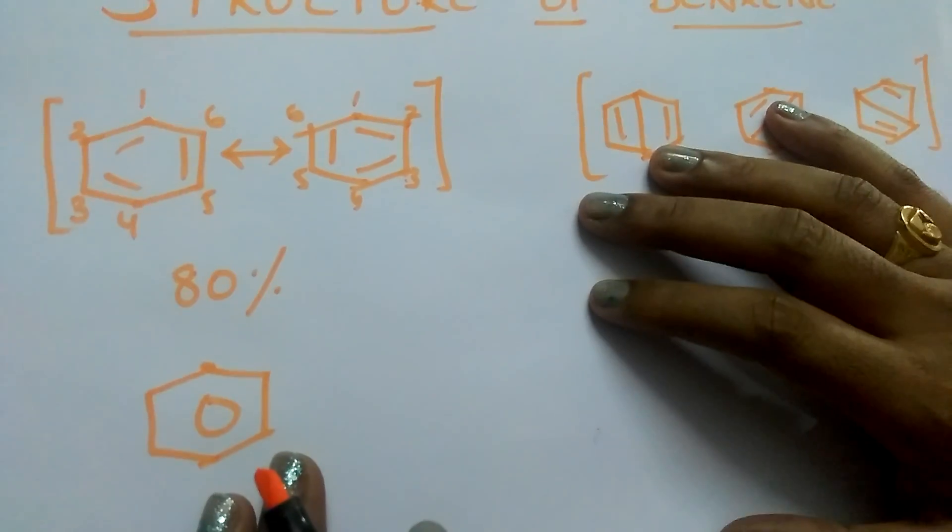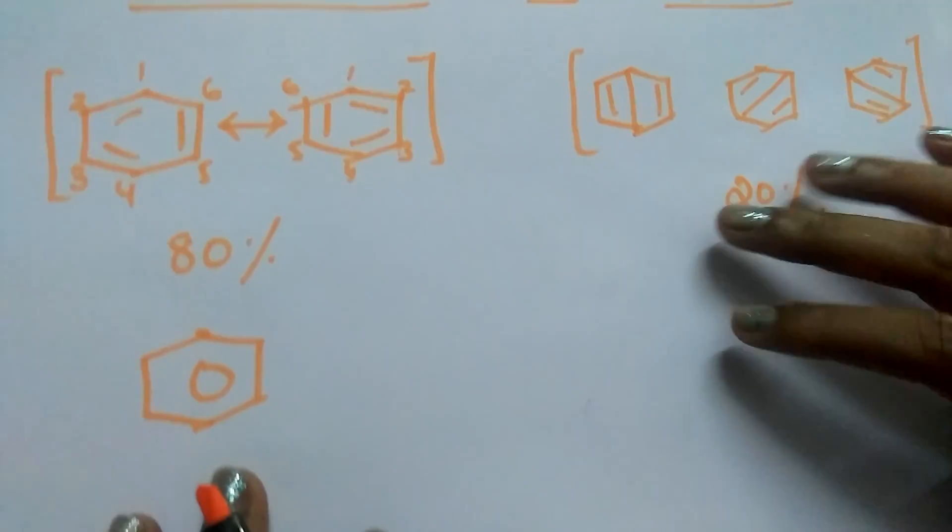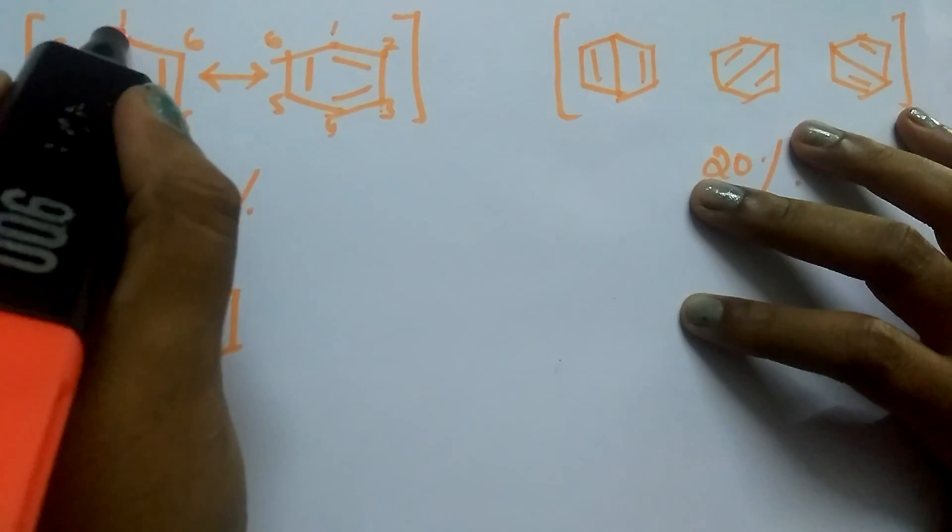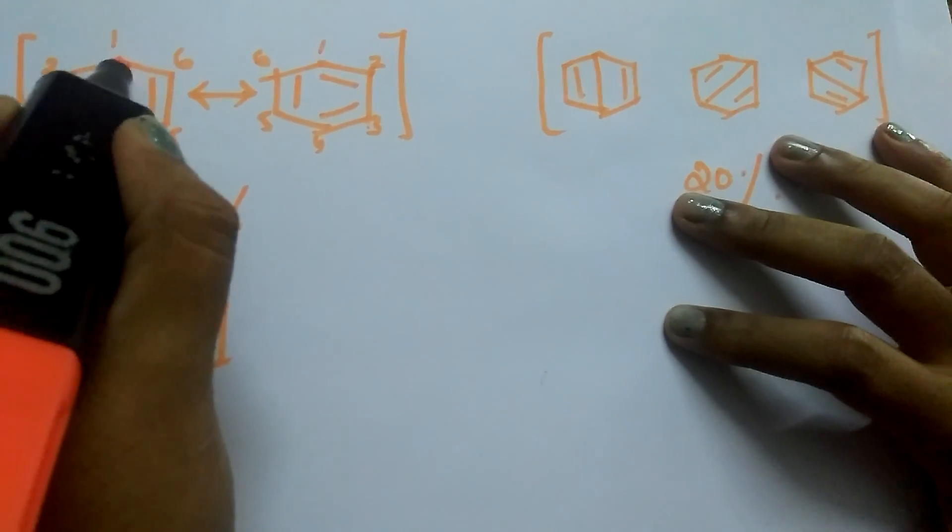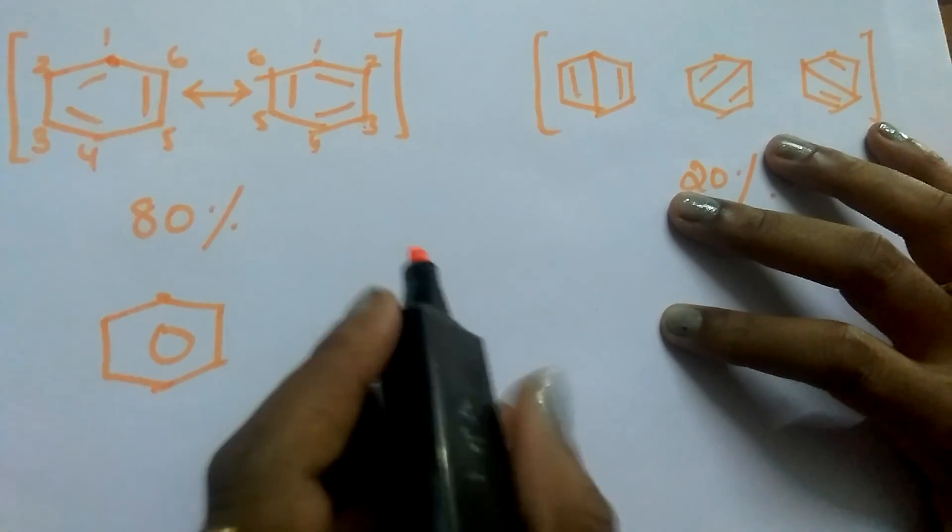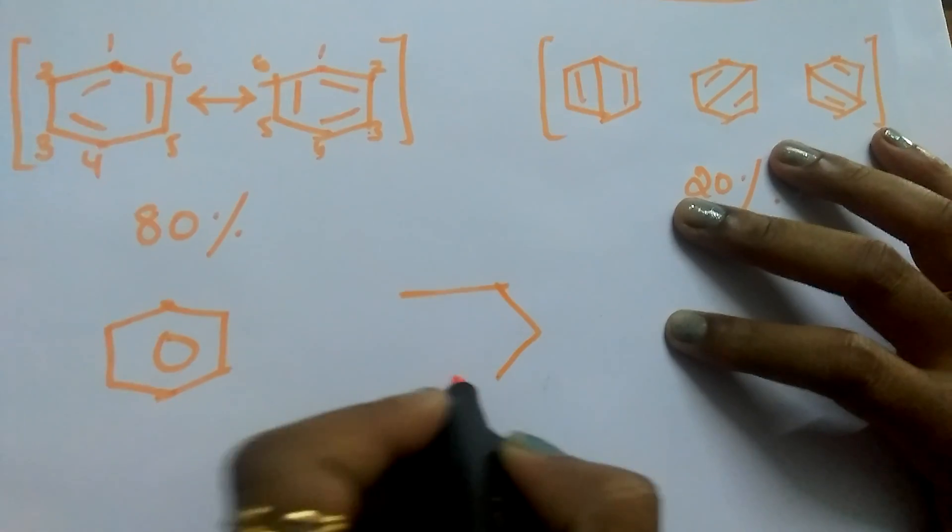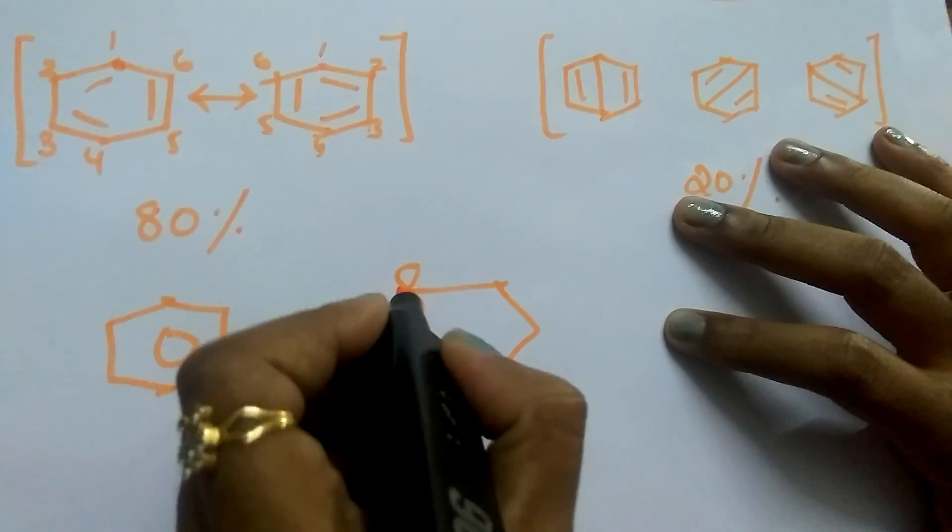According to molecular orbital theory, the modern explanation for benzene is the hybridization of the carbon in this is sp2, and one more p-orbital is present on each carbon.